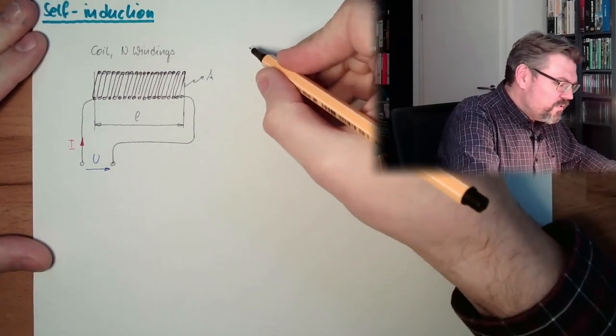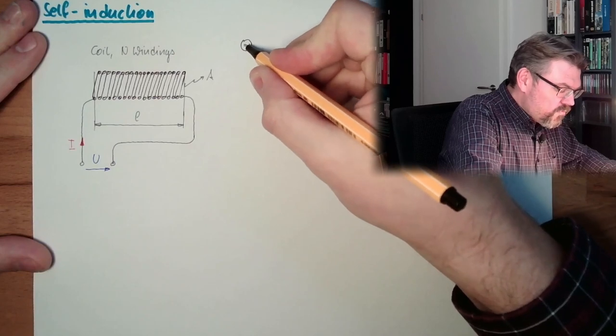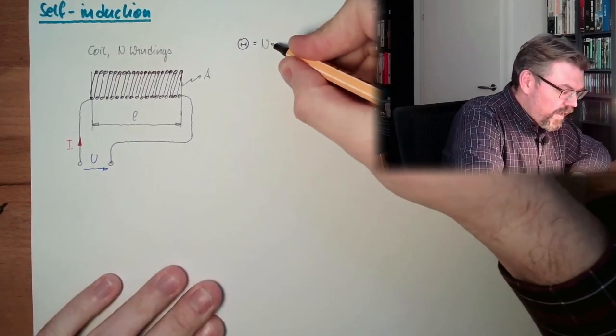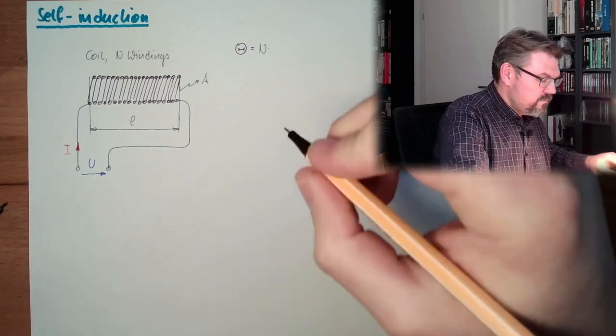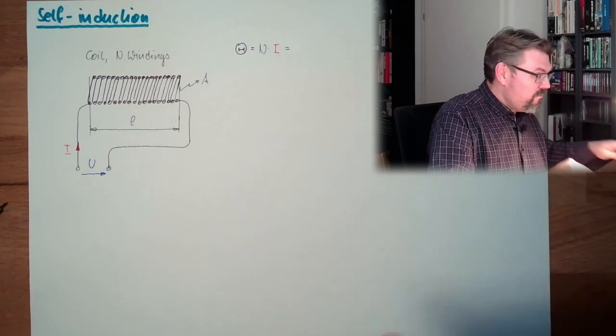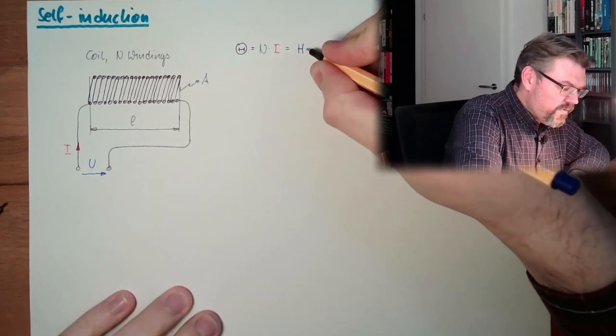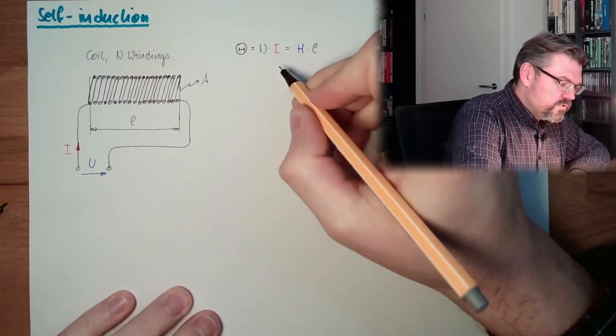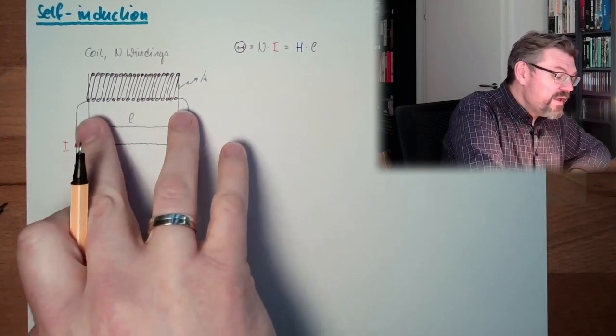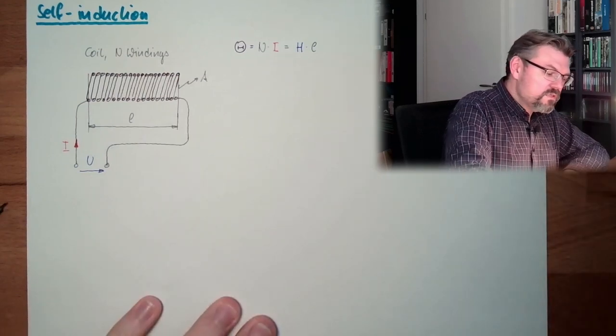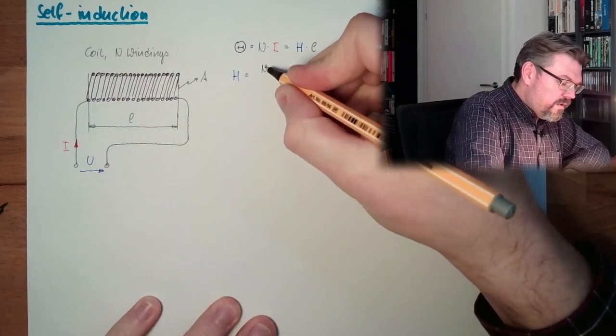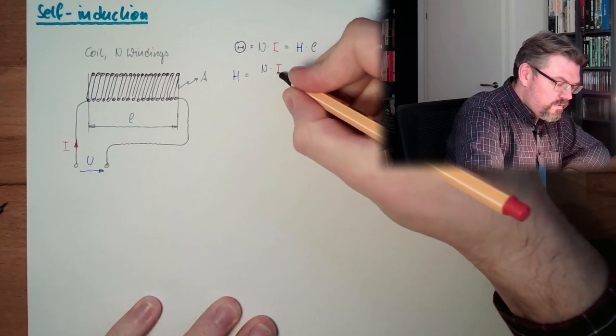So, let's see what the magnetomotive force is. Let's draw the durchflutung. So, we have N windings multiplied by our current I. And this actually equals our magnetic field strength H multiplied by L. Because this is magnetomotive force, divided by L. There is a video where I explain why it's just L and not also the outside.